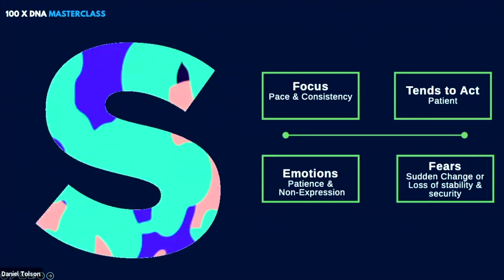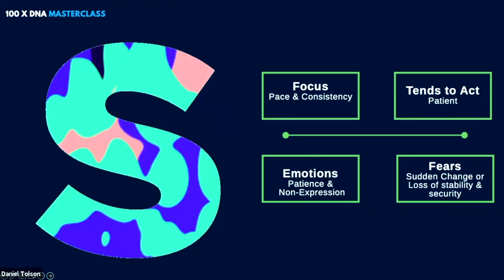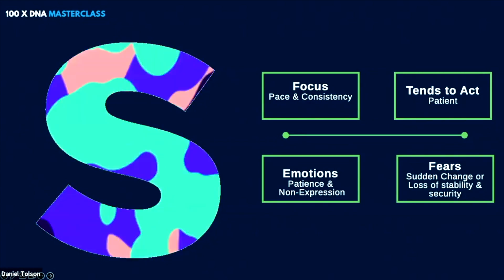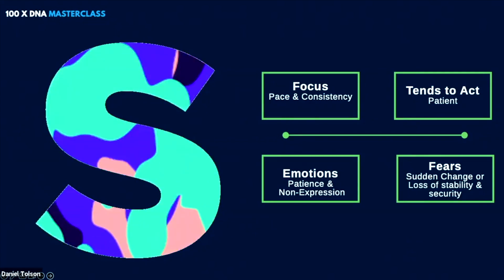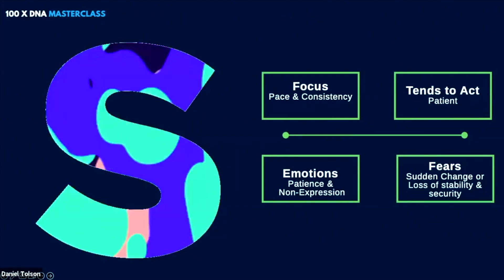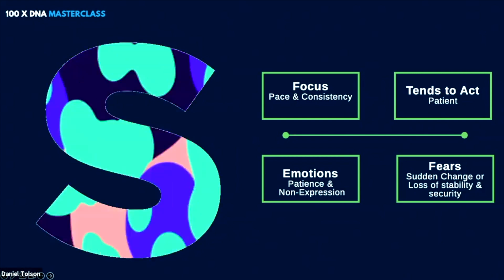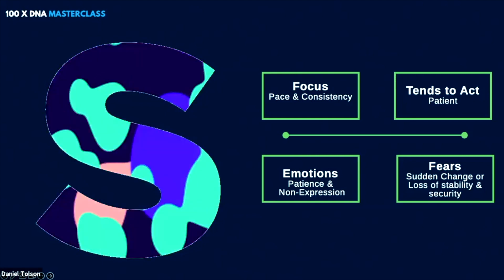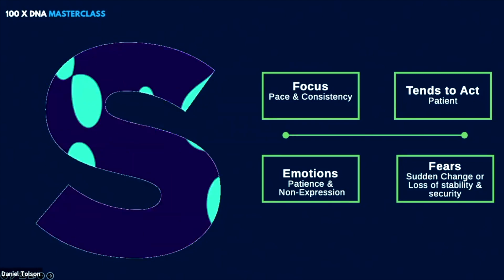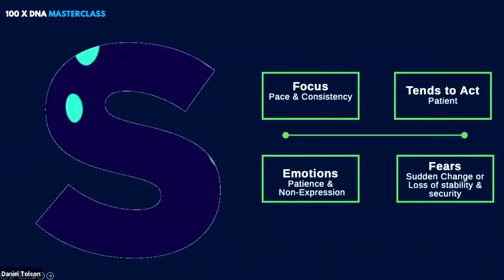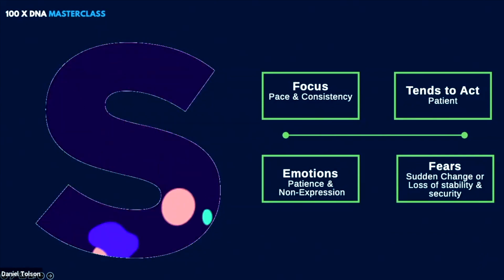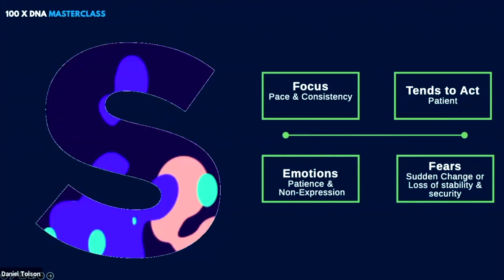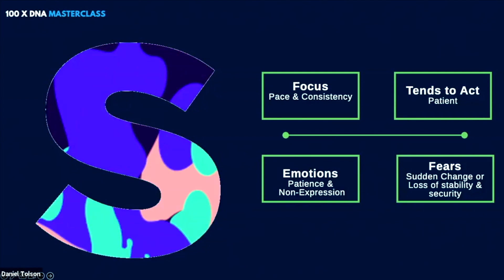The other thing is they tend not to express emotion. The higher the S style, the less emotion that people will see. You won't tend to show it on your face. You won't tend to show it in your physiology. You'll tend to repress or suppress your emotions because you don't want other people to see them. With the S style, the greatest fear is a sudden change — it could be the sudden loss of a job, a request to suddenly move location, or an unexpected job offer. They fear they might lose their stability and security.